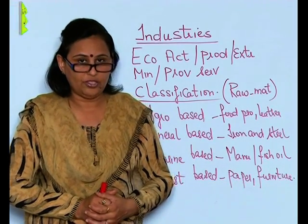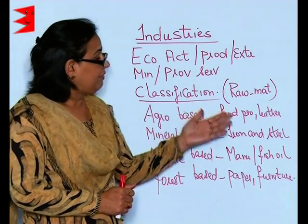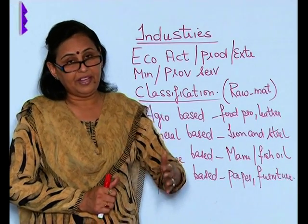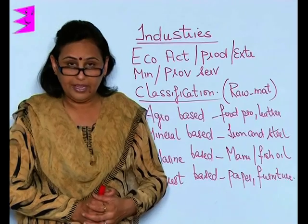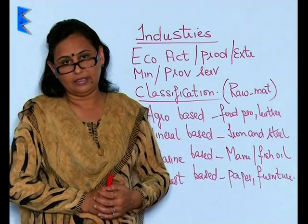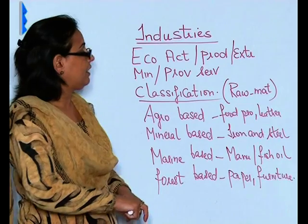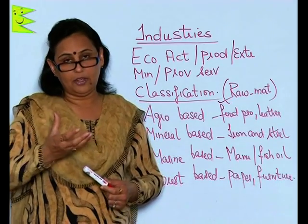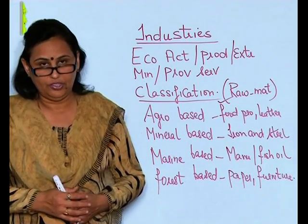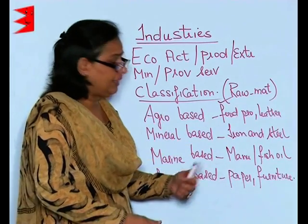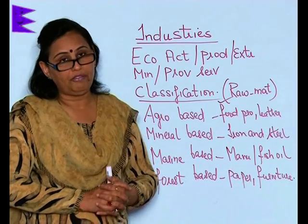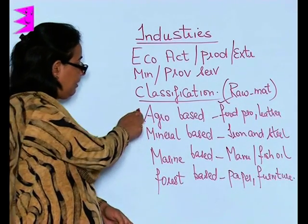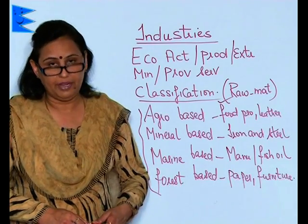When we classify industries, the classification depends on three types of things. The first is the raw material. When we classify industries on the basis of raw material, they are further subdivided into four types of industries.